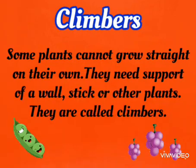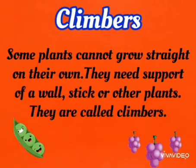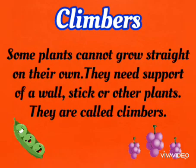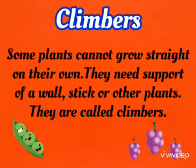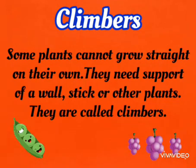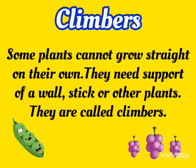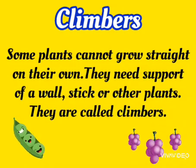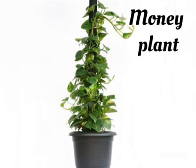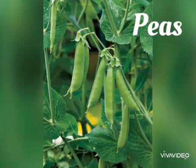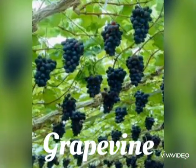Some plants cannot grow straight on their own. They need support of a wall, stick or other plants. They are called climbers. For example, money plant, peas, grapevine, etc.